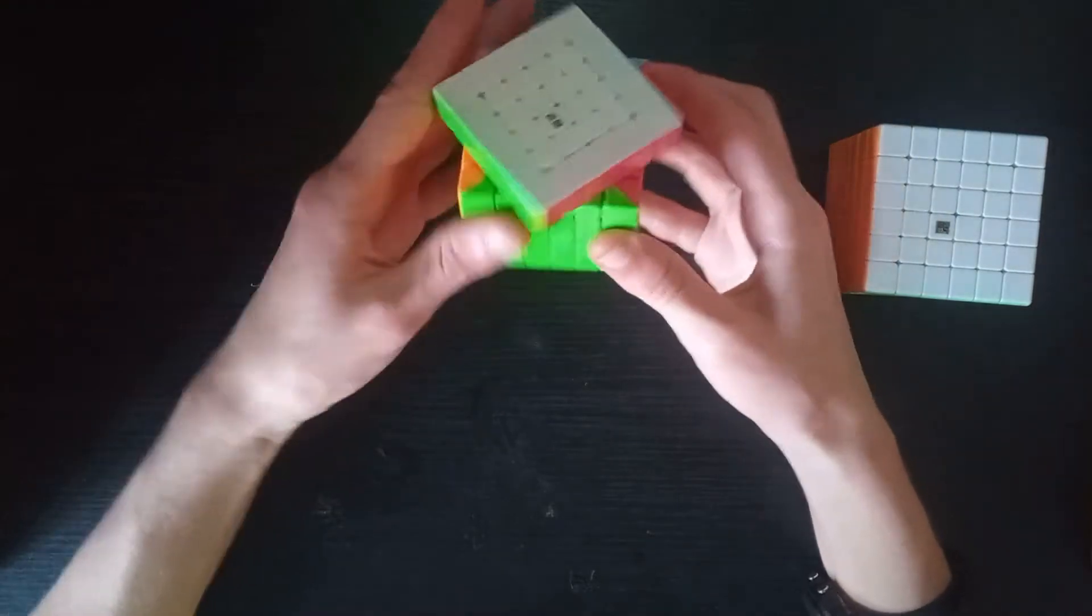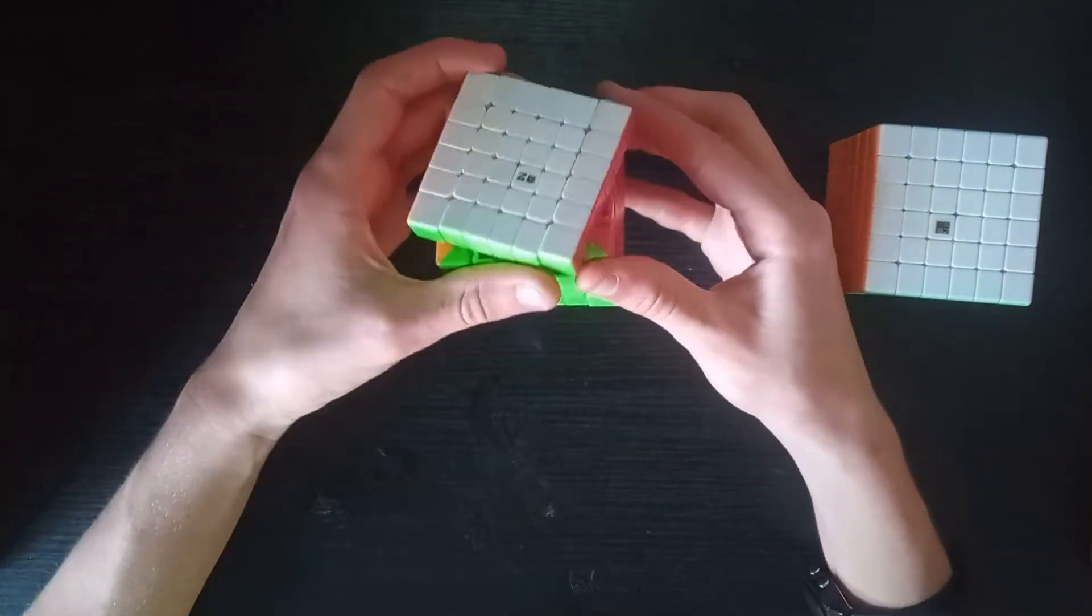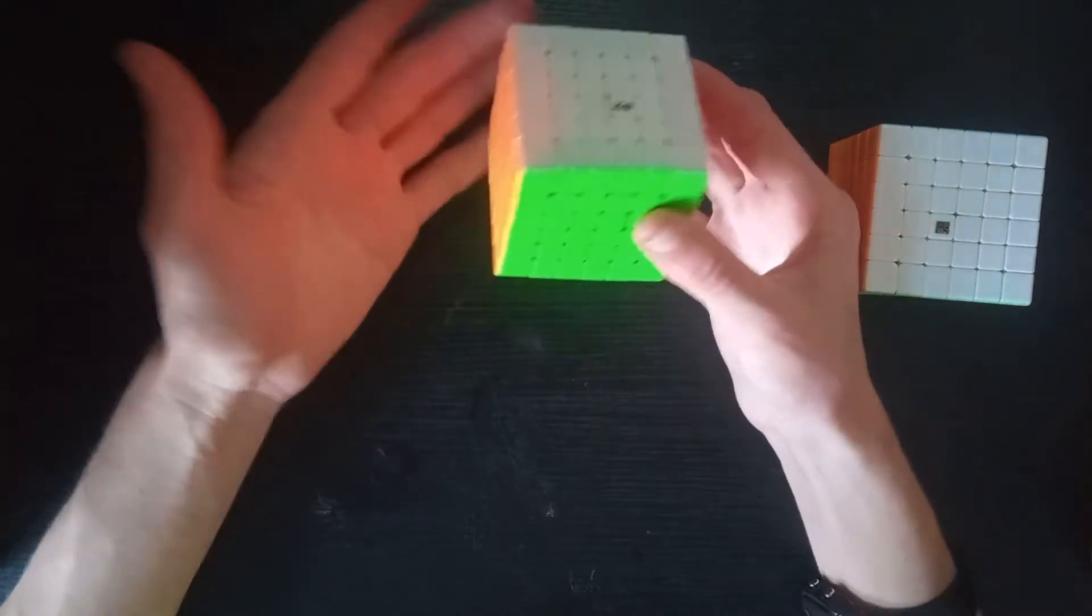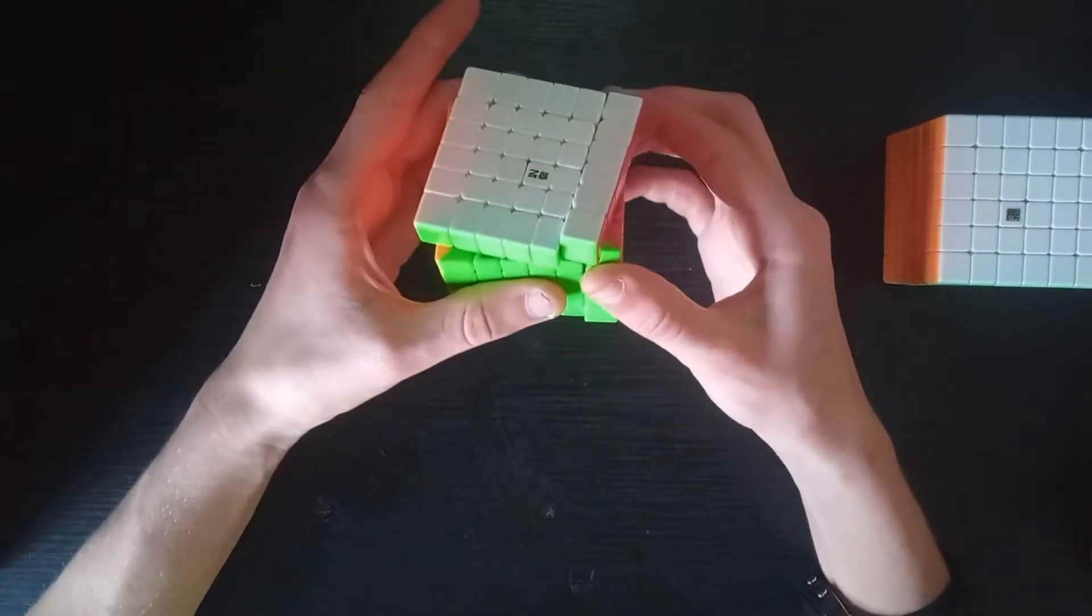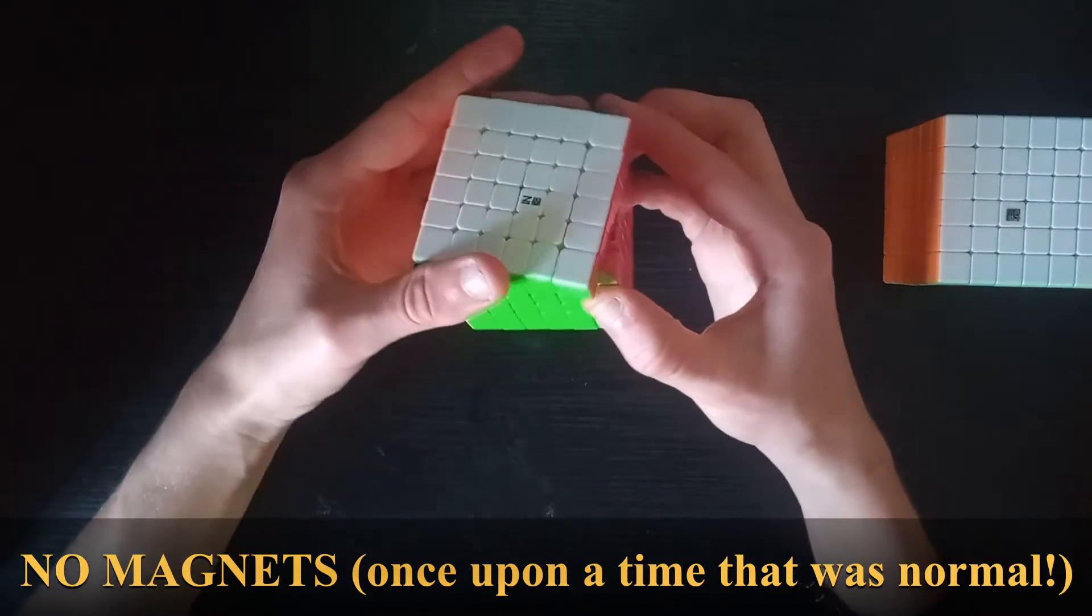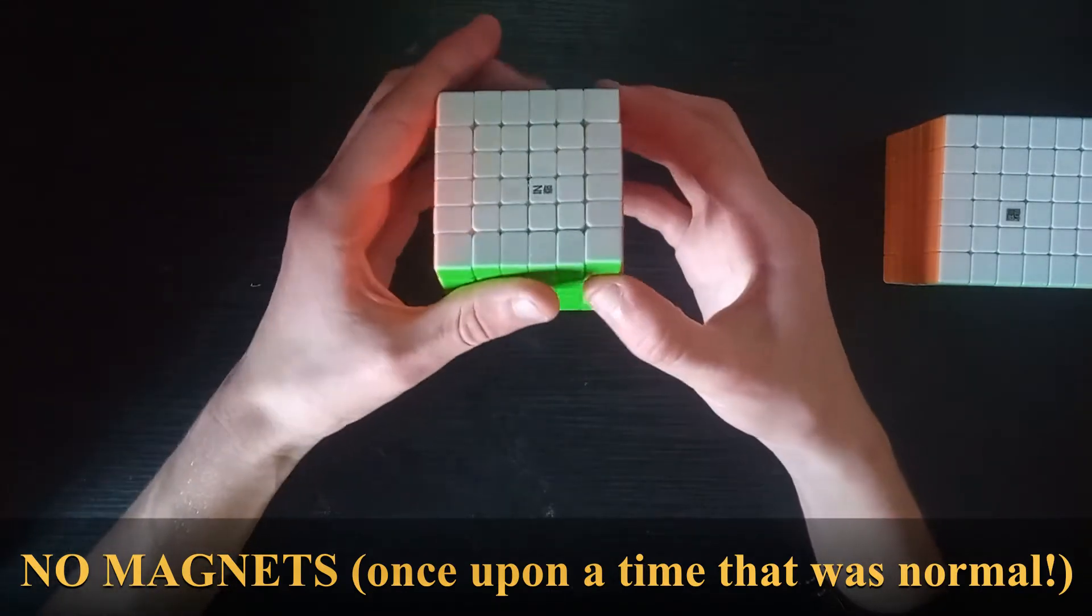With the Chifan S2, it turns reasonably well for being a non-magnetic 6x6. Obviously I need to make that clear, there are no magnets to this, and I'm not going to try and magnetize it myself. I suspect it would be a bit better if it was magnetized, but we'll get on to that.